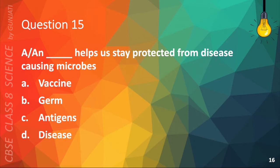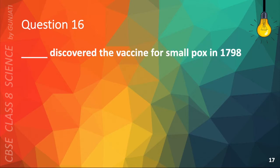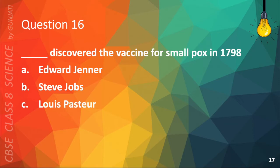Question 15. The correct answer is A. Vaccine. B. Germ, C. Antigens, or D. Disease. Blank discovered the vaccine for smallpox in 1798. A. Edward Jenner, B. Steve Jobs, C. Louis Pasteur, or D. Bill Gates. The correct answer is A. Edward Jenner.